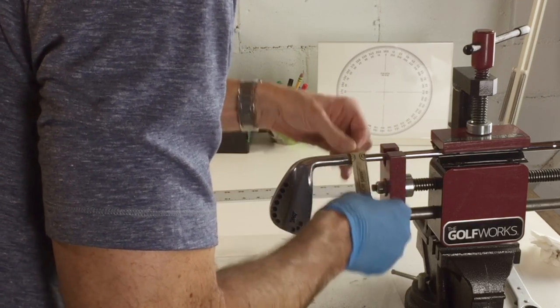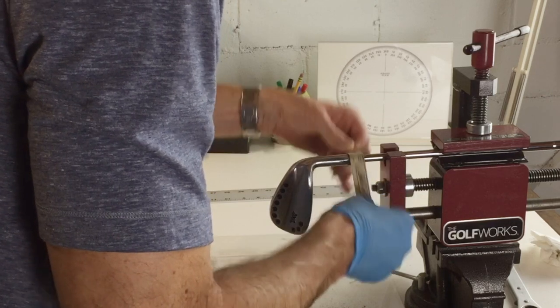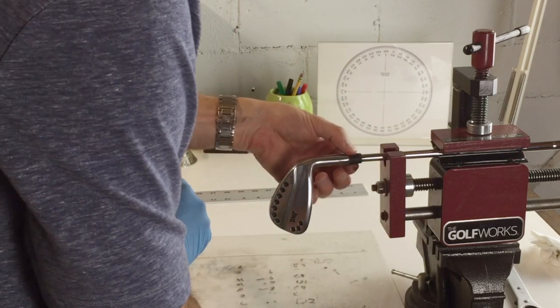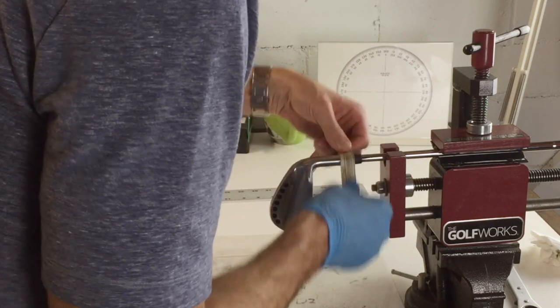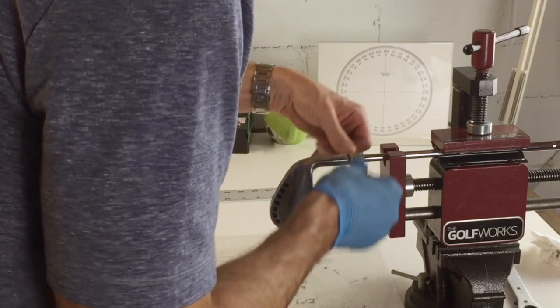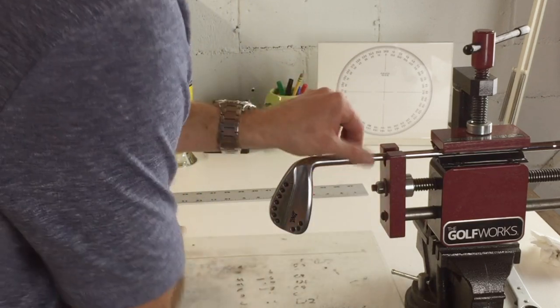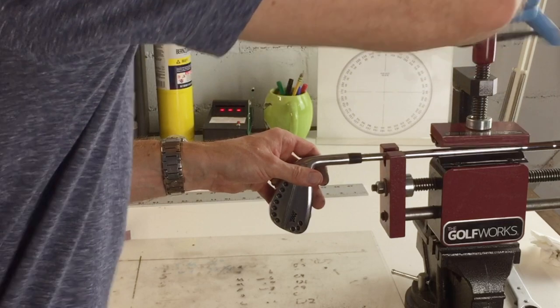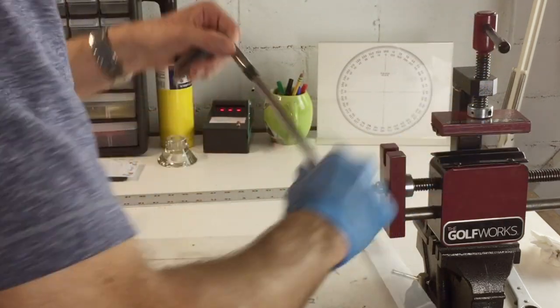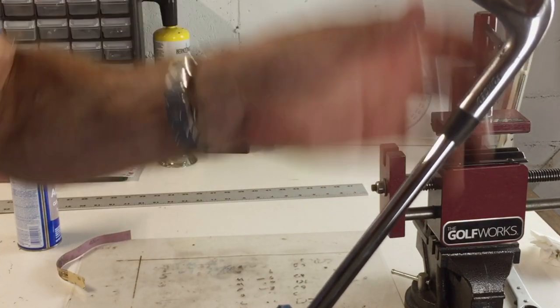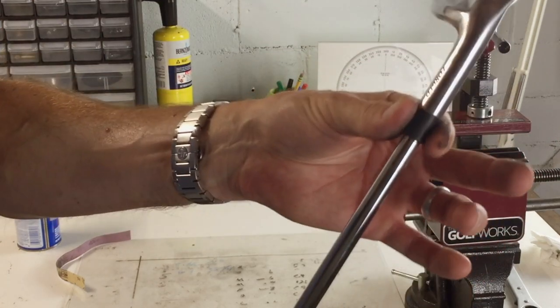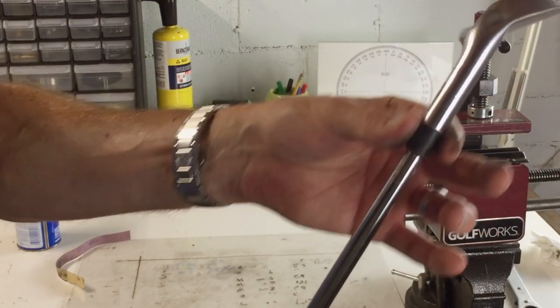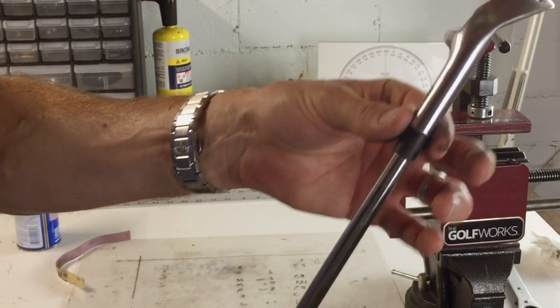Go ahead and feel it. There's a little bit of an edge right there still. Let me take that down just a little more. Take it out of the vise. As you can see here, got it all nice, smooth, and level between the edge of the ferrule and the edge of the hosel.